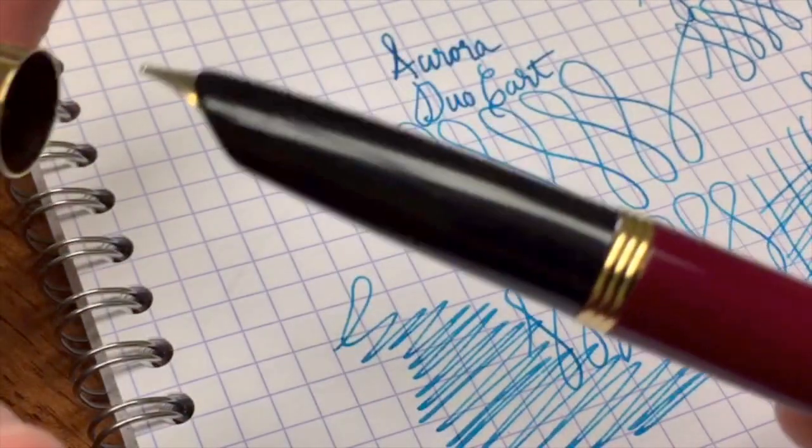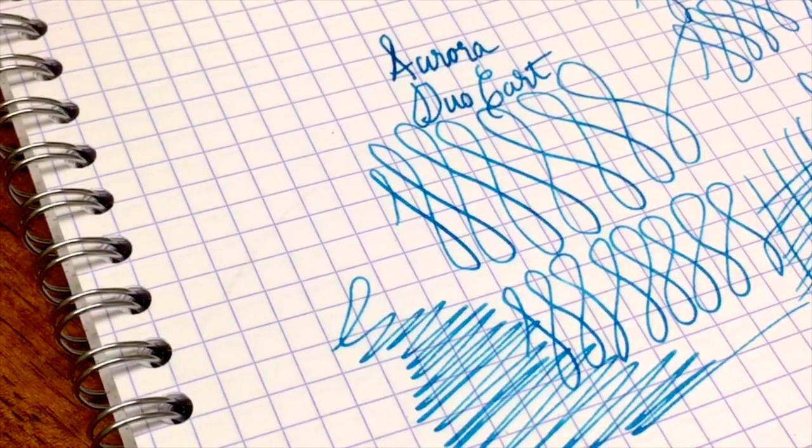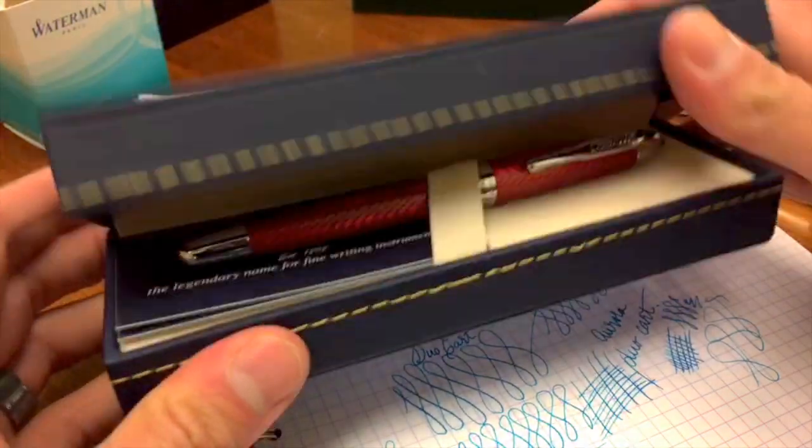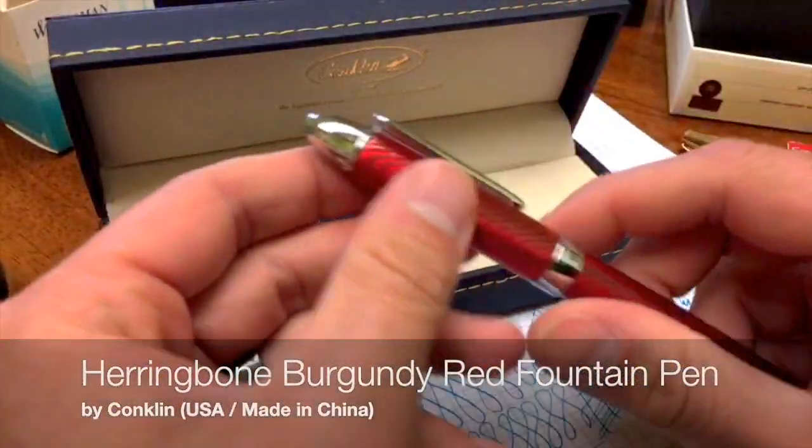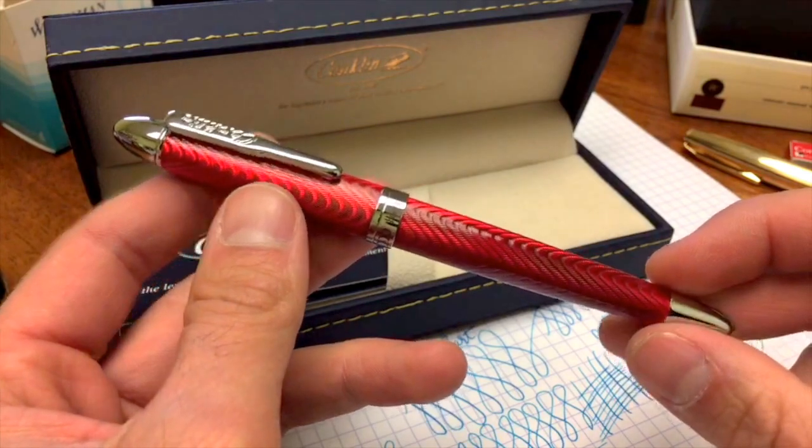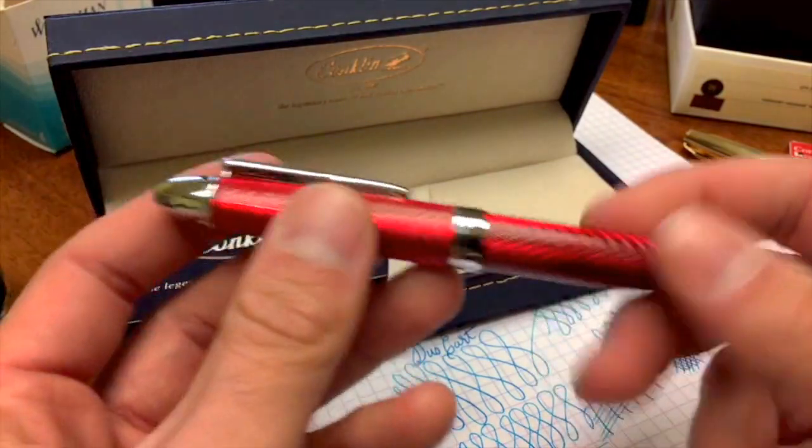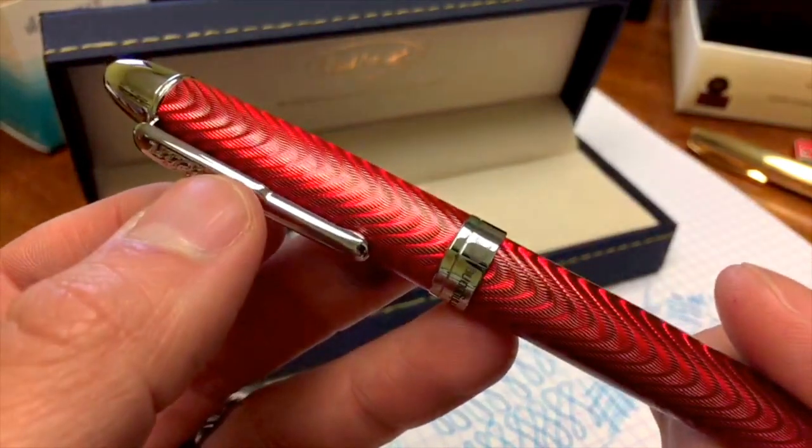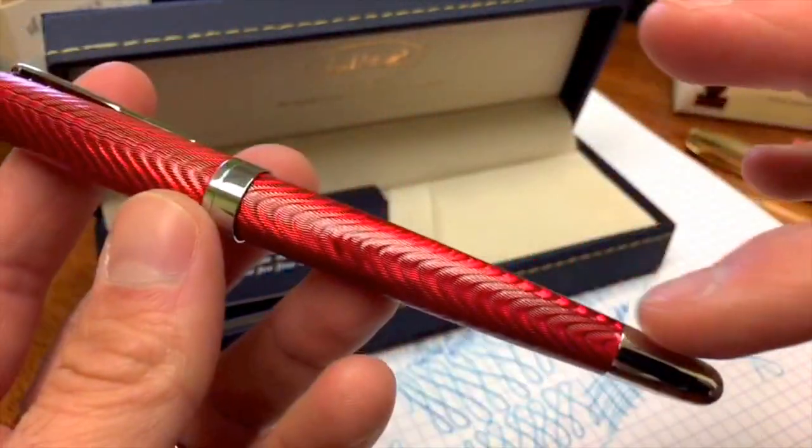So let us take a look at, now we just took a look at the Aurora Duo Cart. Let's take a look at our next pen on the docket today, which is the Conklin Herringbone. So this is a new collection. It's a redo or redesign of Conklin's previous Herringbone collection, which I also have here. It is a metal-based bodied pen, so it's got a good amount of weight to it. And what they did was on the barrel here, they engraved a herringbone design pattern that just undulates throughout the cap and the barrel.